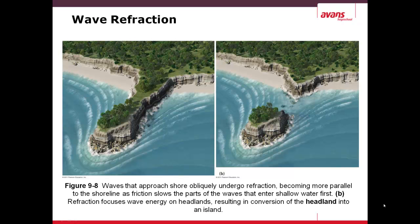The waves, as they approach the shore, can approach parallel or perpendicular. If it is parallel, then this will slow part of the wave — specifically the part that enters the shallow water first. This focuses the energy onto what could be a headland, which is a peninsula of land jutting into the ocean, resulting in an island, which you see on the right.